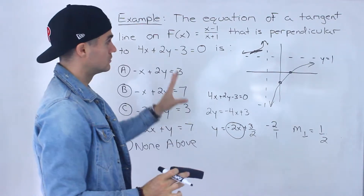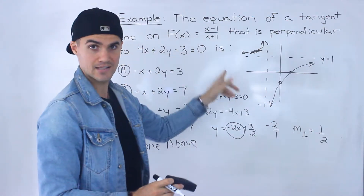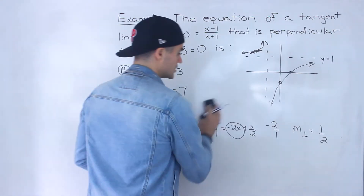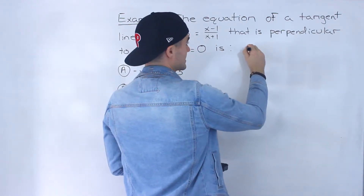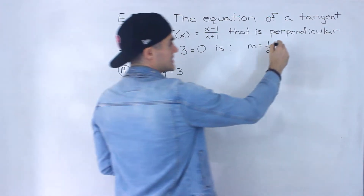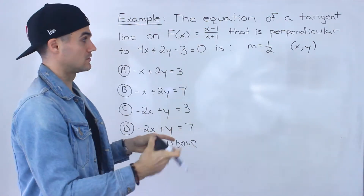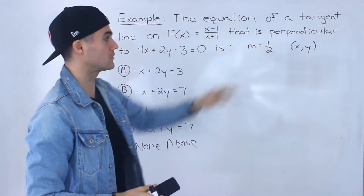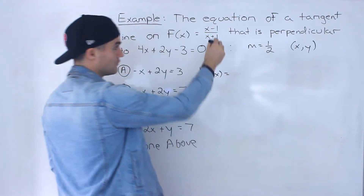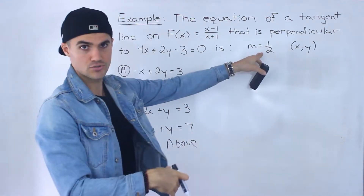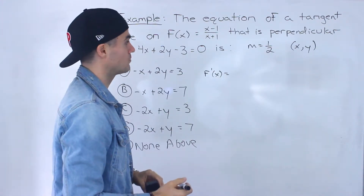We basically have to find a tangent that has a slope of 1 over 2 on this function. We know the tangent has to have a slope of 1 over 2, but we've got to find out where that's going to happen on this function — the actual location where that tangent slope equals 1 over 2. We can find the derivative of this function, set it equal to 1 over 2, and solve for x.